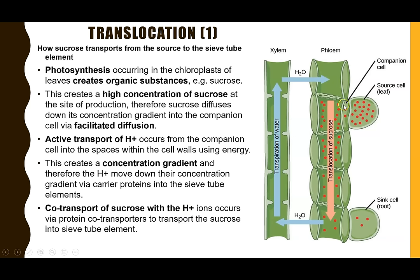Now that there are lots of hydrogen ions in the cell wall, they can attach to the co-transporter protein to be transported back into the companion cell. In doing so, sucrose can attach to the carrier protein and be transported into the sieve tube elements.